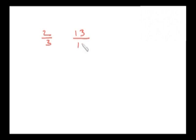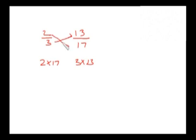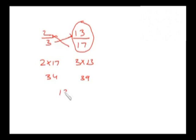Now let's take one more example. I am having 2 by 3 and 13 by 17. Let's cross multiply: it's 2 into 17 and it's 3 into 13. So it's 34 and it's 39. Since 39 is greater than 34, 13 by 17 will be greater than 2 by 3.